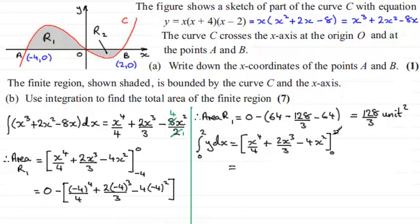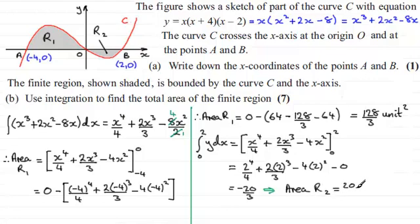And if we substitute our values, 2 first, you're going to get 2 to the power of 4 over 4 plus 2 times 2 cubed over 3 minus 4 times 2 squared. And then put 0 through. Well, that's 0, 0, minus 0. So, you're going to have basically minus 0 there. Well, if you work this out, this comes to minus 20 over 3. And it follows from this that the area can't be a negative value. We expect it to be negative because it's below the x-axis here. So, it follows then that the area of R2 must be the positive value, 20 over 3 units squared.